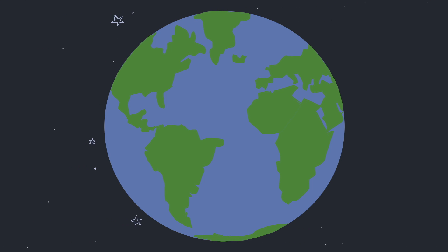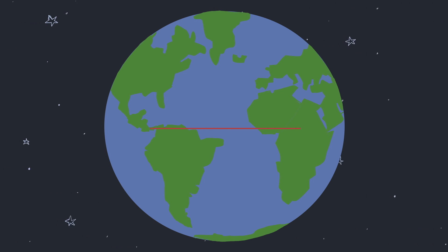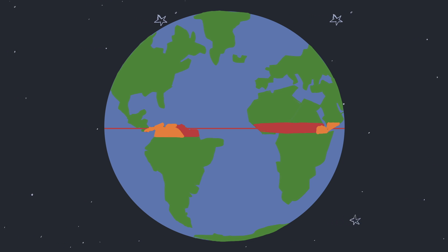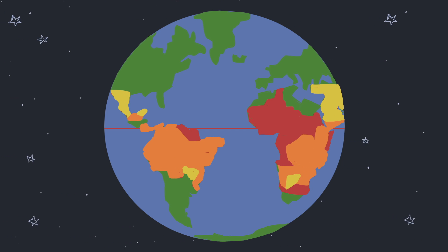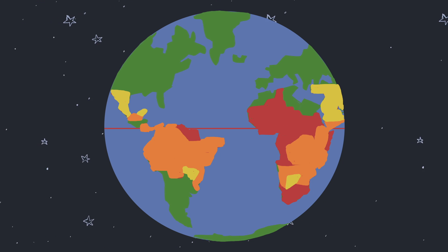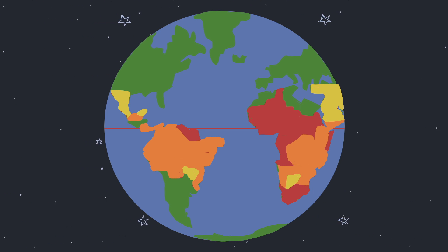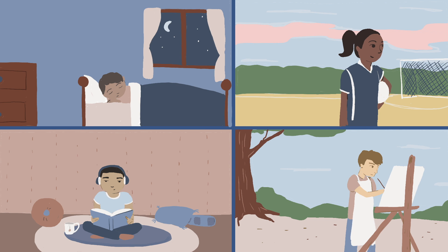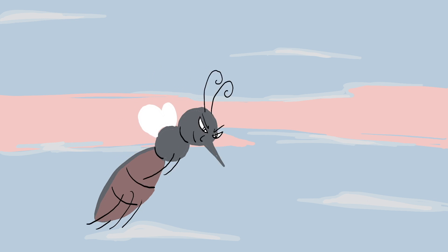Malaria is a parasitic disease spread by mosquitoes that affects people in tropical regions around the equator. A bite from an infected mosquito allows the malaria parasite to enter the bloodstream.